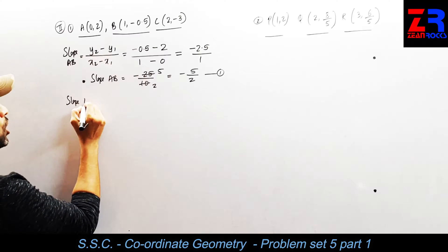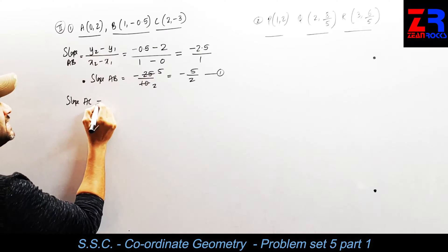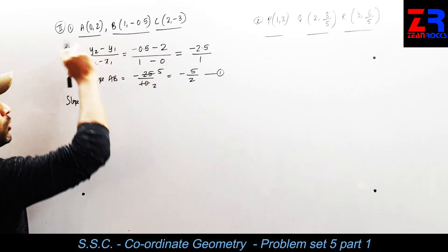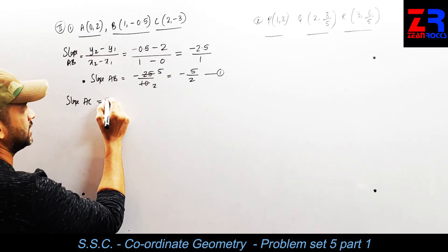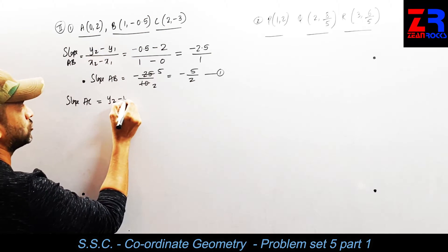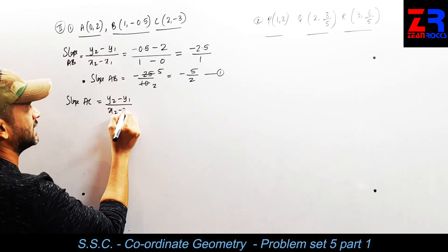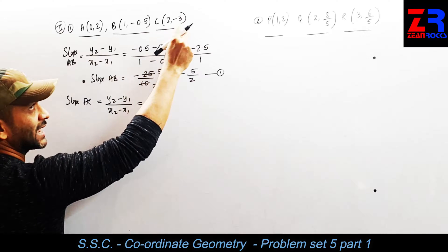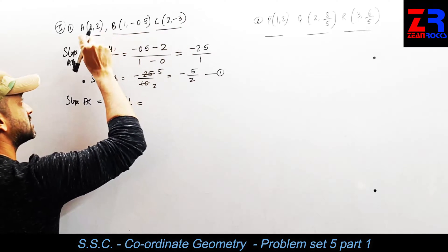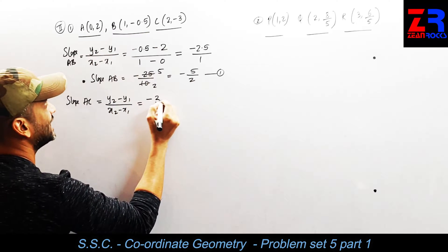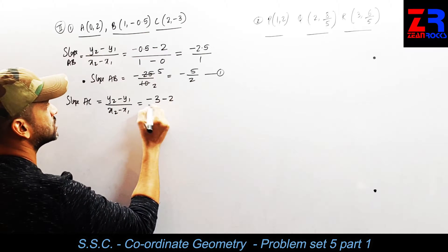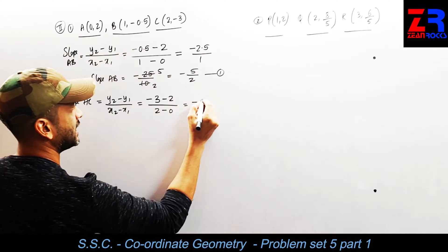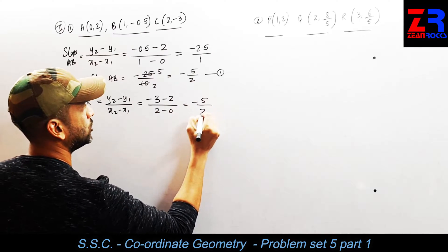Now I will write slope of AC using the same formula: y2 minus y1 upon x2 minus x1. That is second number minus the second number upon first number minus first number: minus 3 minus 2 upon 2 minus 0, which gives minus 5 upon 2.